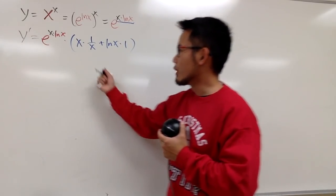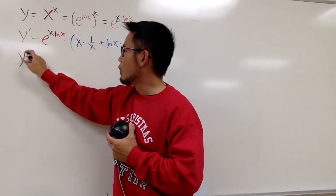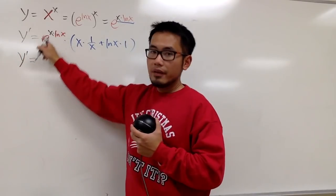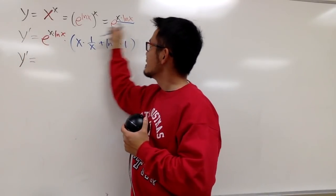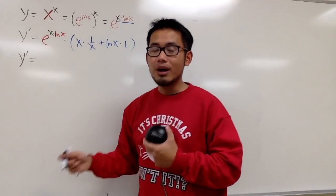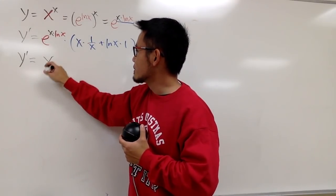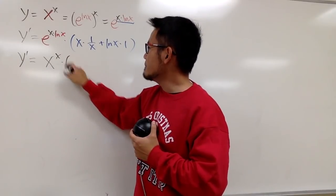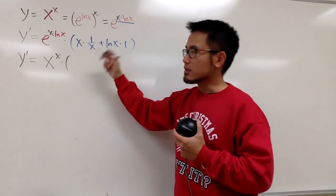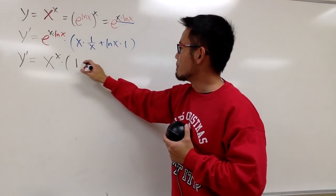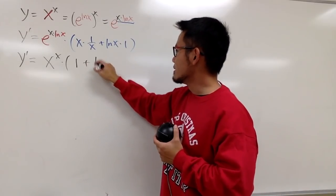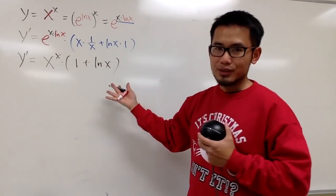At the end, we just have to write it back. This is going to be y prime equal to, this is just x to the x power. Let's write that down. So, this is x to the x power times x times 1 over x is, of course, just 1. And then, we have plus ln x times 1 is just ln x. So, that's the first derivative.